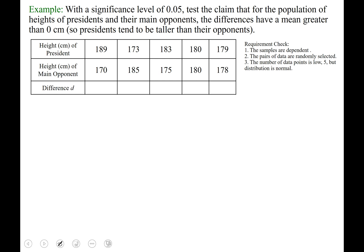So we have two sets of data values here. We have the president and we have the main opponent, and their heights are listed in centimeters. So as you can see at the moment, we have two populations, but we're going to pair them together and we're just going to look at their differences.